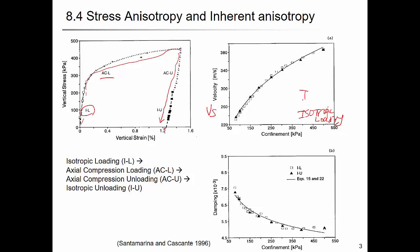For isotropic loading and unloading, the velocity just increases with confining stress and when you decrease it, it follows the same path. Damping decreases with confining stress because you have more contact and the soil gets stiffer. When you unload - decrease the confining stress - it just increases back following the same path.